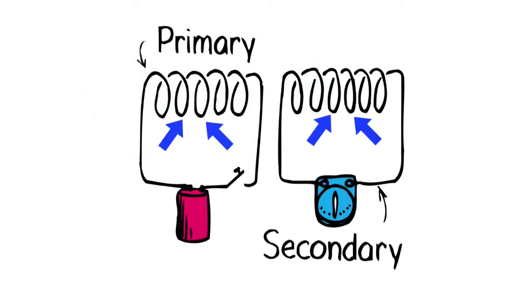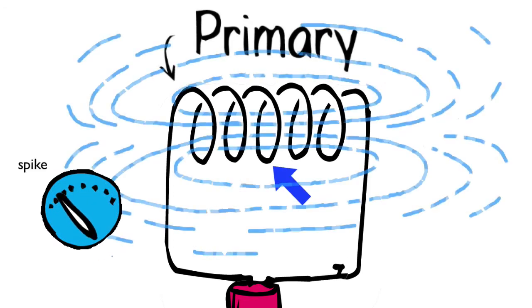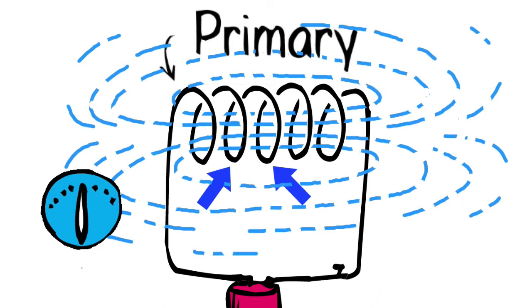Consider just the primary. When you turn on the electric current, the magnetic field goes from nothing to something. As this magnetic field arises, there's an additional spike in voltage that occurs simply because of the changing magnetic field the different loops detect.